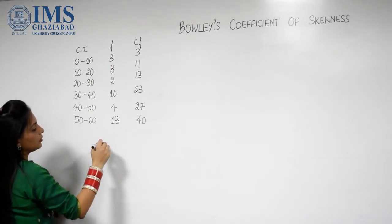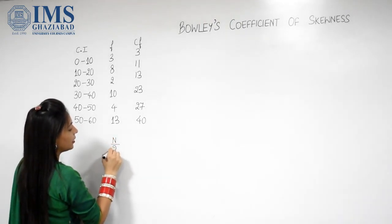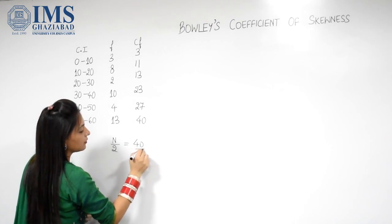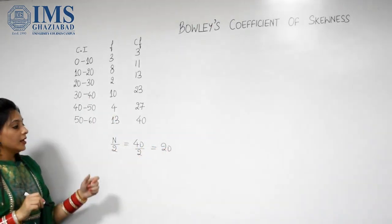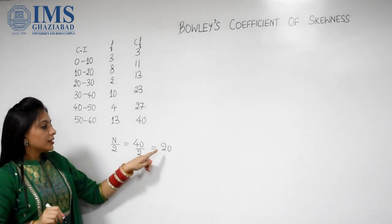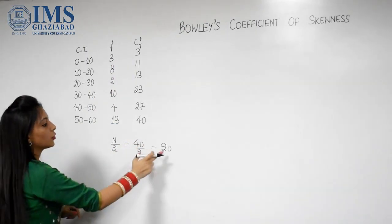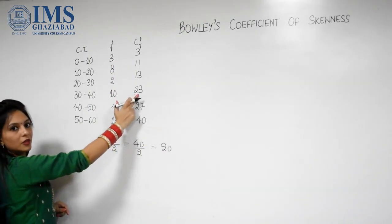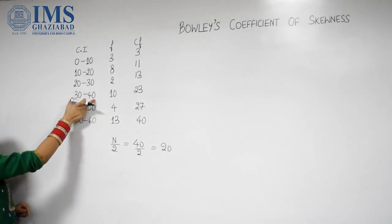Now for calculating median, we first need to calculate N by 2. N by 2 means 40 divided by 2, which gives us 20. For calculating median, we see the first bigger term than 20 in CF. The first bigger term than 20 in CF is 23, and corresponding to that, our class interval is 30 to 40.